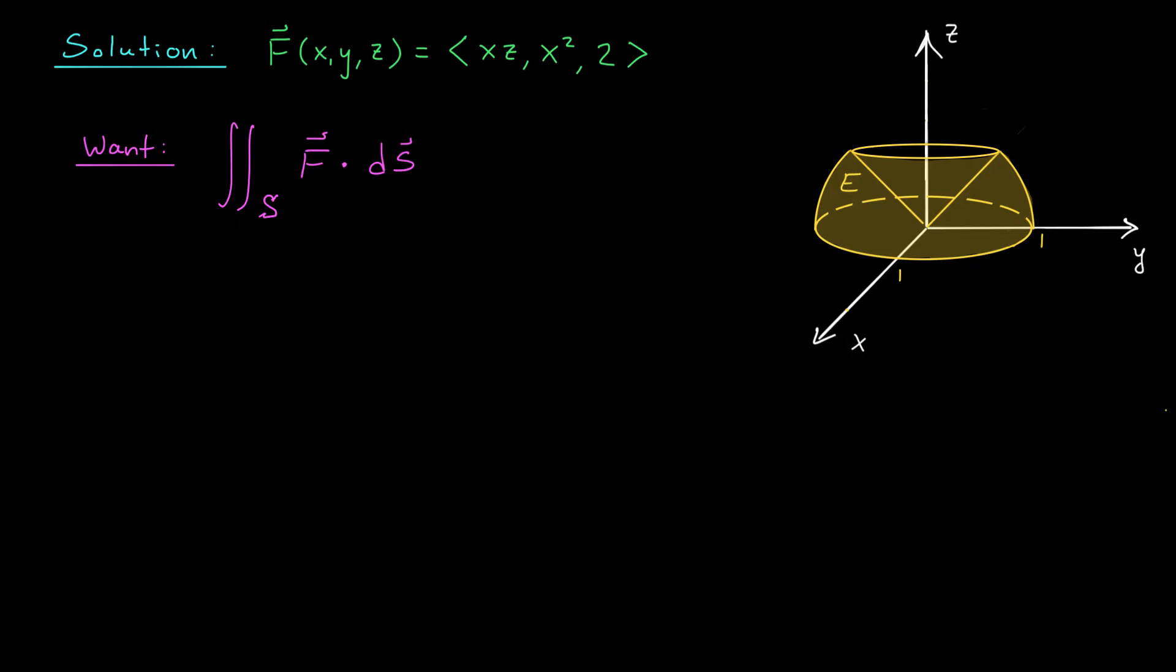And in fact, as we'll see shortly, it's impossible. There is no vector field g whose curl is given by this expression here. So Stokes' theorem is off the table. We can't replace this surface integral with a line integral. We're going to have to think of something else.